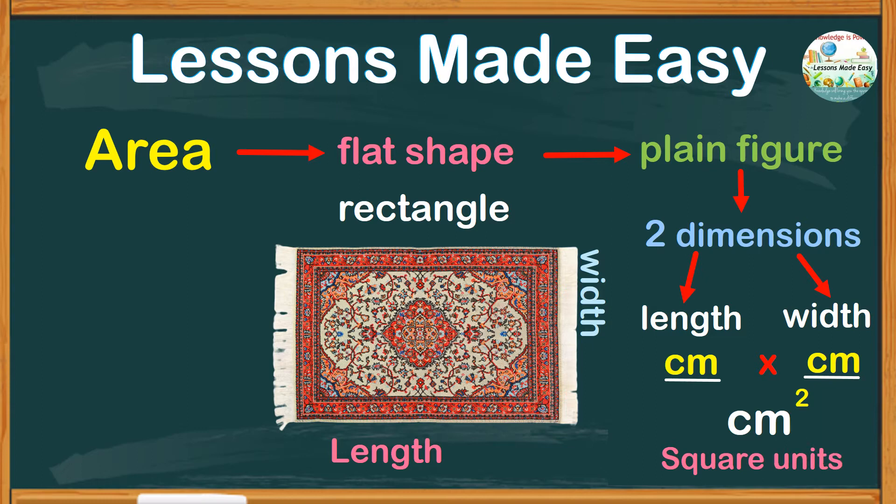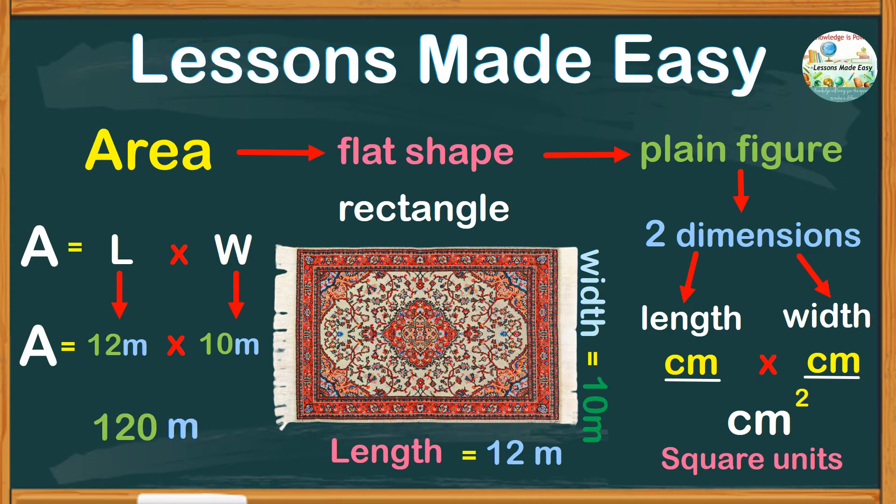Let's say the length of this carpet is 12 meters, and the width is 10 meters. To find the area would be equal to the length multiplied by the width. All we need to do is substitute the values. A for area equals L for length, which is 12 meters, times the width of 10 meters. And this would give us a product of 120. The unit meter was used twice, so we write 2 as the exponent. So our area is 120 square meters.